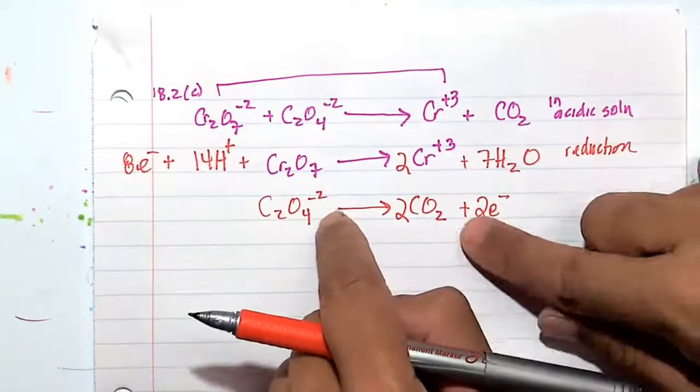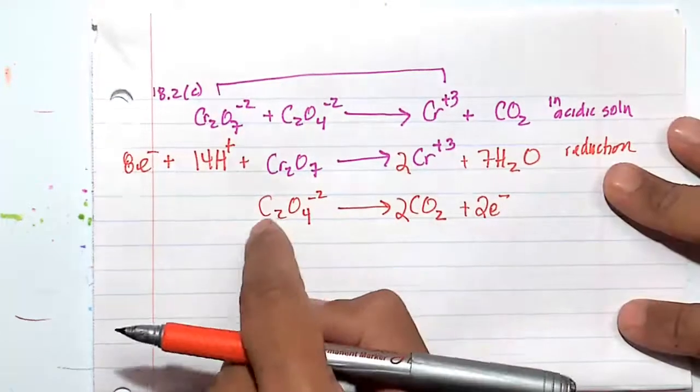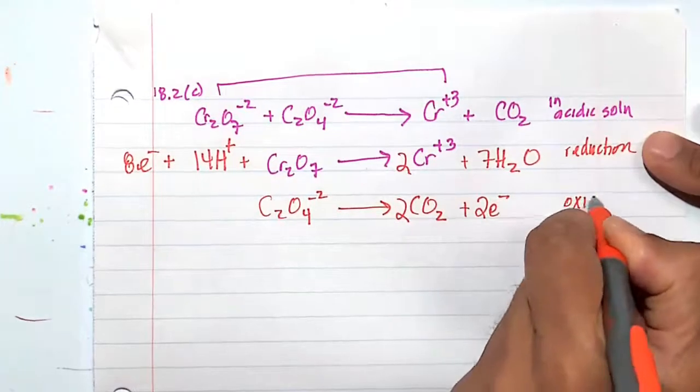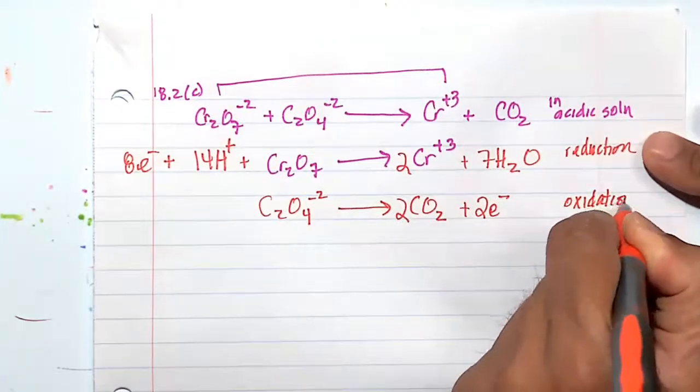So you see here, minus 2 here, minus 2 here. Two carbon, two carbon. Four oxygens, four oxygens. Here we lost two electrons. So this is called an oxidation half reaction. And it's also known as the anode if you're talking about a battery.